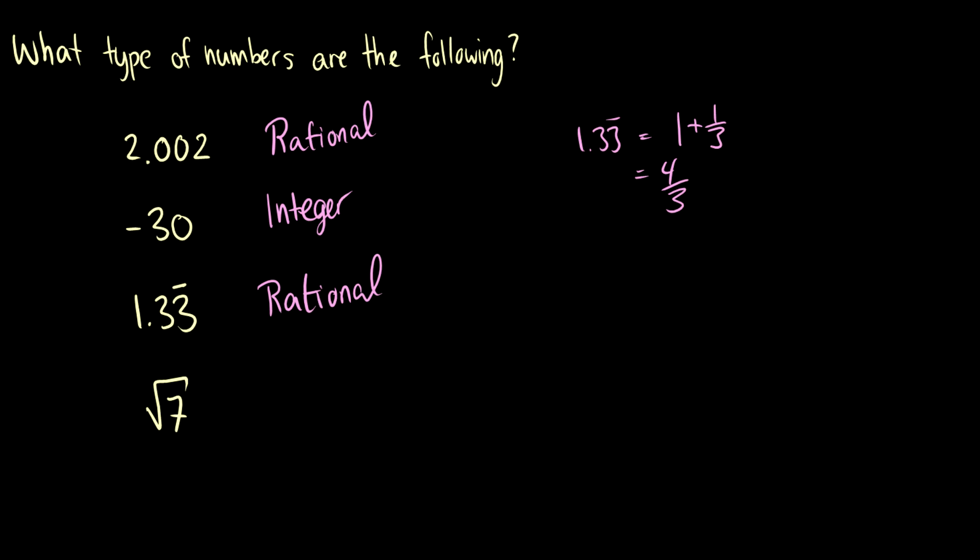What about root seven? Well, if you put this into a calculator, you'll see that there's no real given pattern that you can see. So we're going to claim it's irrational. And you'd have to verify this for yourself. And in discrete math, you will learn how to prove this. But I'm not going to prove that here. But this number is irrational, you cannot write it as a fraction.